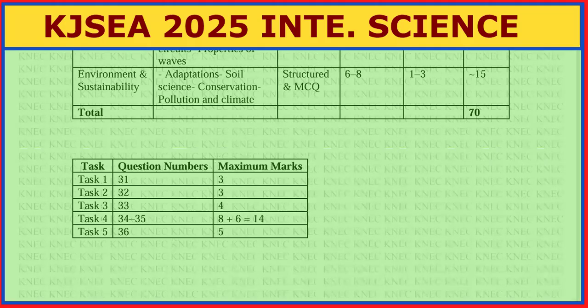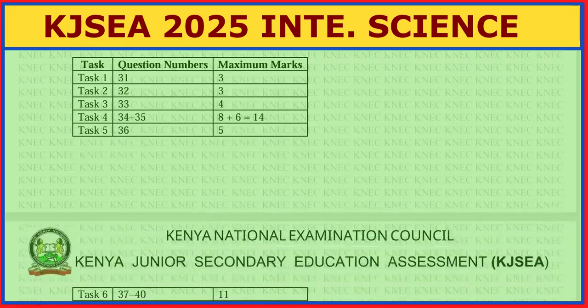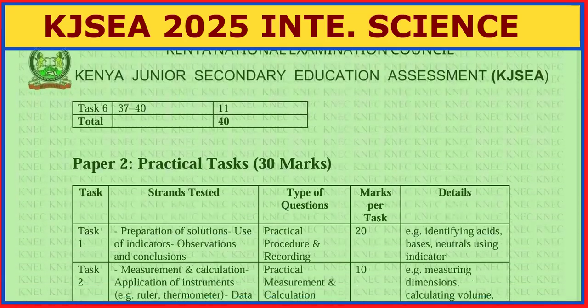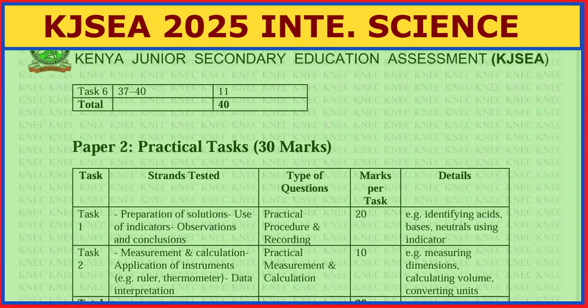The last tasks are Task Five, with question 36 giving five marks, and Task Six with questions 37 to 40 — four questions — giving a maximum of 11 marks, bringing the total for Section B to 40 marks.